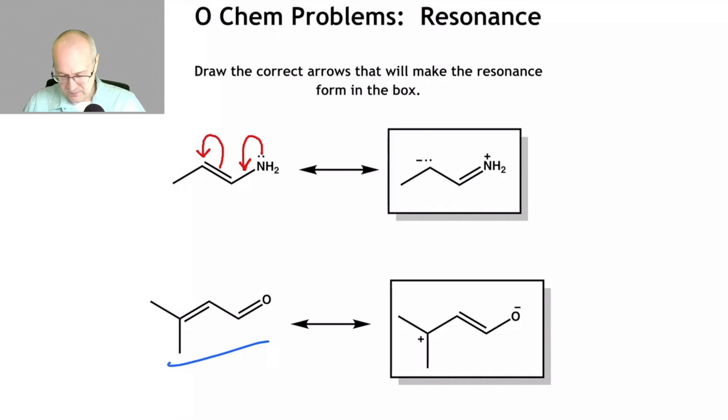All right. Let's look at this one. Now remember, there's lone pairs here. So we have to form a sextet on this carbon, a pi bond between here and here, and break the pi bond here and have a negative charge on this oxygen.